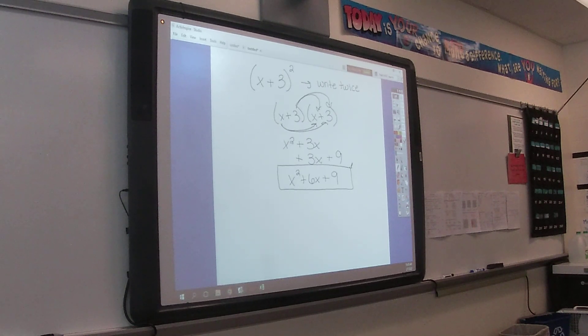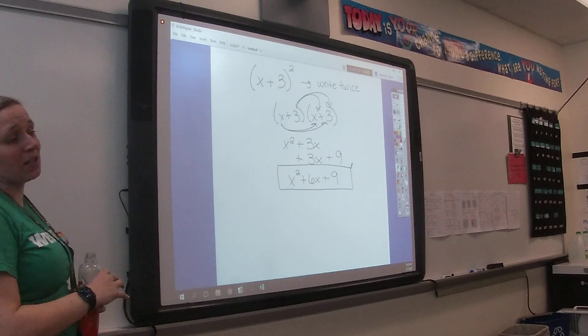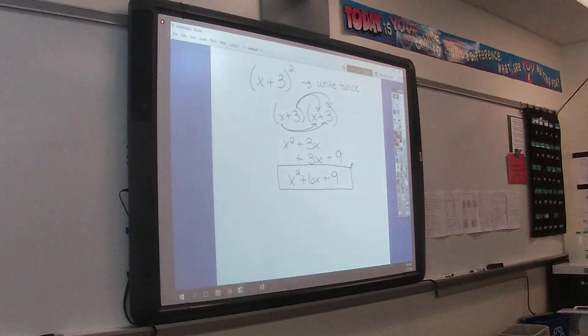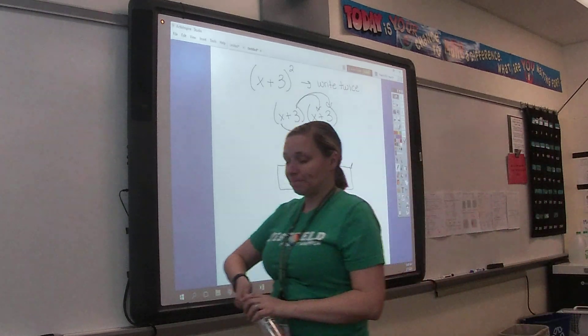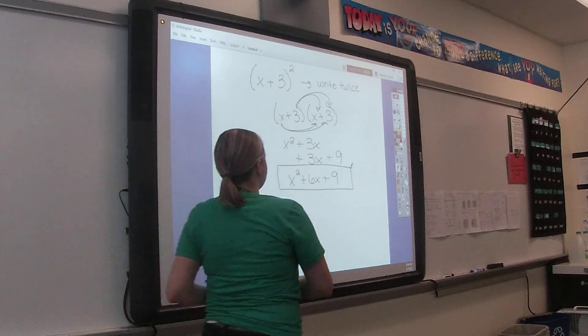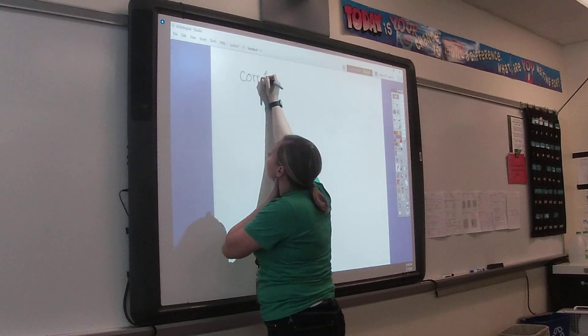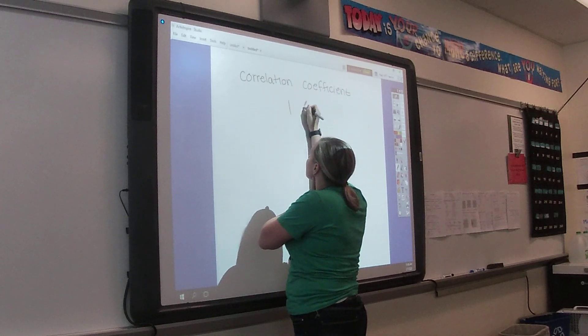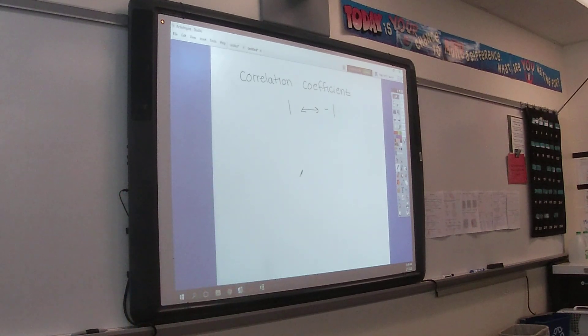The last unit that we then talked about was data analysis. So that's the test we just did and we just reviewed for. Biggest thing, a correlation coefficient always falls in between 1 and negative 1. You have to be able to calculate values from a frequency table, causation versus correlation. We should know when it's going uphill it's a positive correlation, downhill it's a negative correlation.